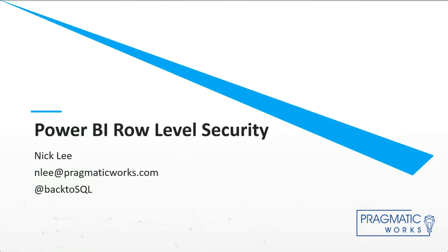Row-level security is a really hot topic. They're always making changes to the functionality. Over the last year there have been tons of changes that people are very happy about. We're going to give you the rundown from the basics to a more advanced level of row-level security. It's a way to restrict access in your data model to certain rows of data — for instance, if a salesperson in the Northeast region should only see Northeast sales data, even though everyone uses the same data model.